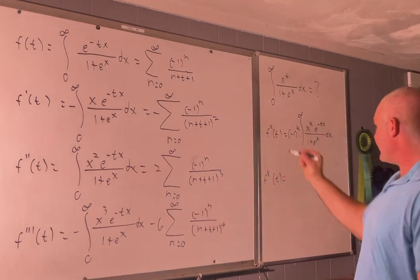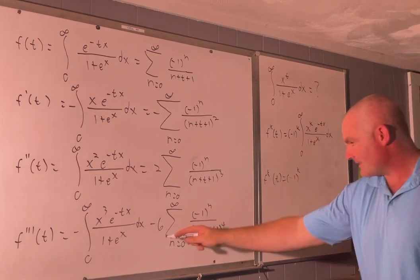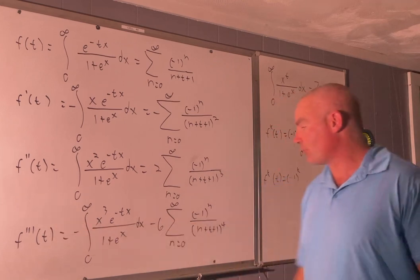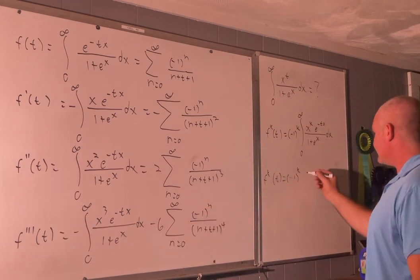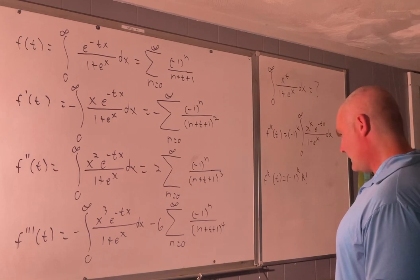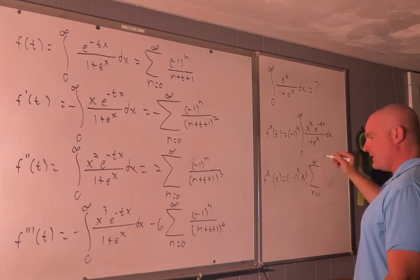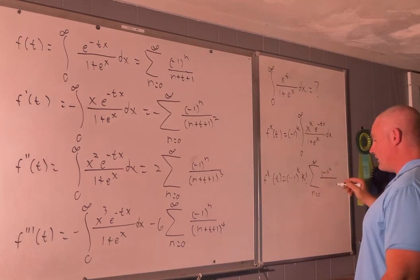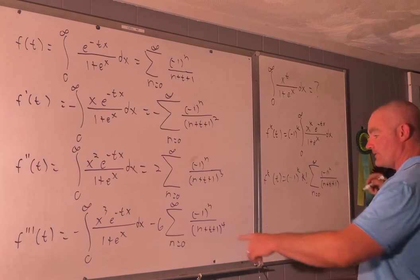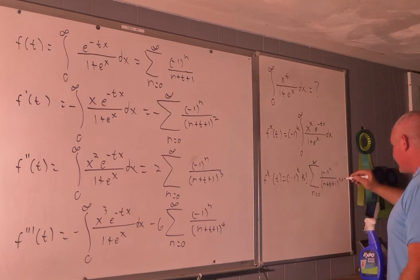The kth derivative expressed as a sum: it alternates positive and negative, and the coefficient is k factorial — since at derivative 3 we got 6, which equals 3 factorial. So we write k factorial times the sum as n goes from 0 to infinity of negative 1 to the n over n plus t plus 1 to the k plus 1 power.